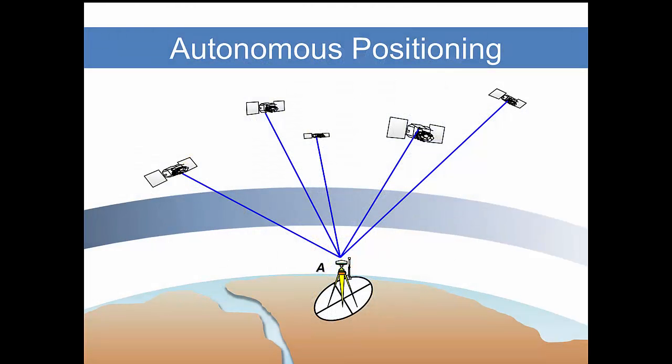Your cell phone, the GPS in your car, and recreational GPS units use what we call autonomous positioning. You may recall that the word autonomous means acting alone. So in autonomous positioning, your receiver is acting alone and the signals it receives from multiple satellites are subject to the ionospheric errors that we talked about before.